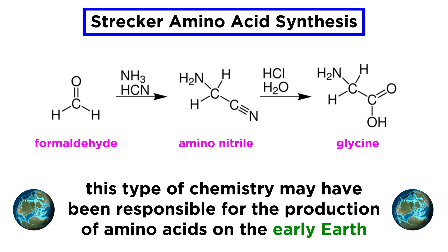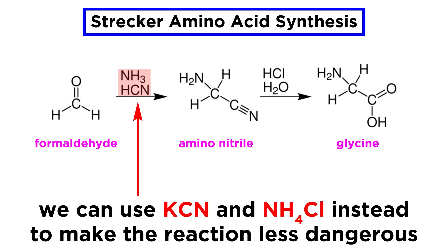It is widely believed that this reaction may have led to the formation of amino acids on this planet, since aldehydes, hydrogen cyanide, and ammonia were likely abundant on prebiotic earth. However, in the lab, the reaction is carried out by heating an aldehyde with potassium cyanide and an ammonium salt, in order to avoid the dangers associated with ammonia and especially hydrogen cyanide gas, which is extremely toxic.